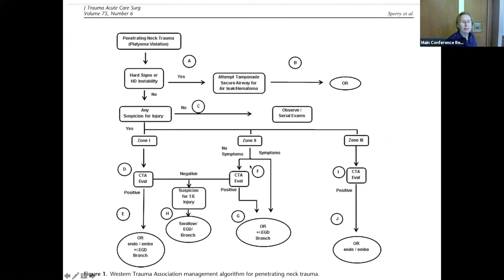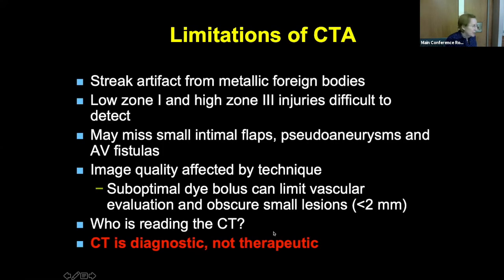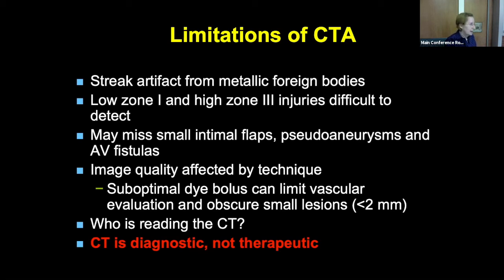For zone one and two, we worry about the esophagus and the airway — so even a negative CTA means you still have to do something for those. Patients with significant symptoms in zone two can go directly to the OR or directly to the surgeon. Limitations of CTA: streak artifact for low zone one or high zone three injuries, small intimal flaps, pseudoaneurysms and fistulas may be missed. Image quality depends on technique and protocol, and who's reading it matters. And remember — these are diagnostic, not therapeutic.